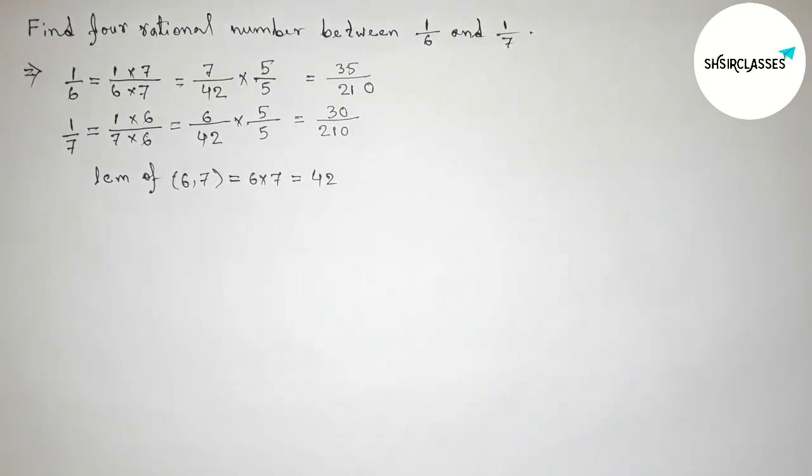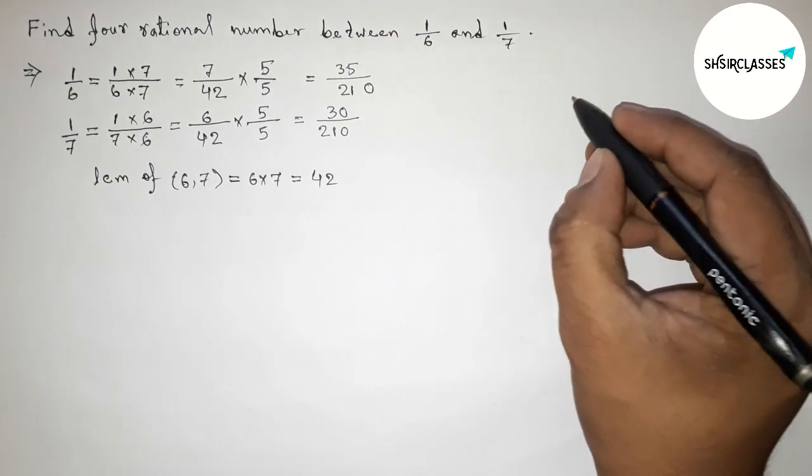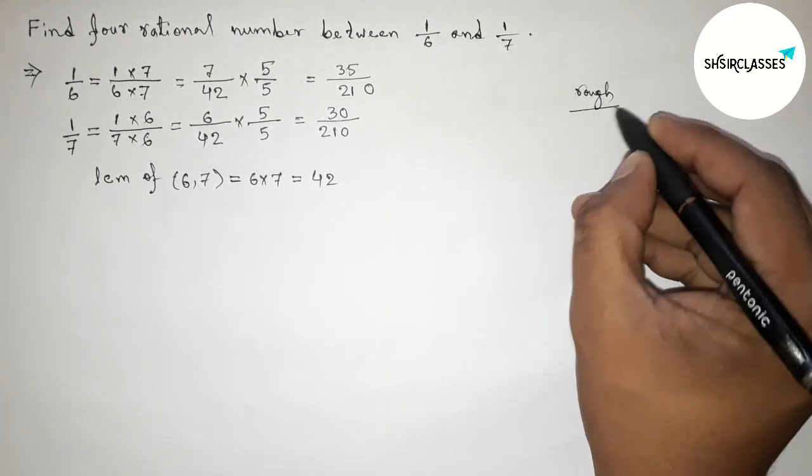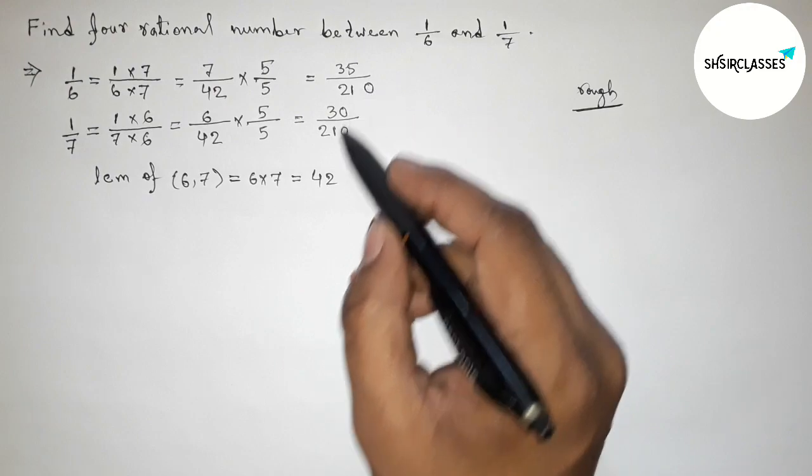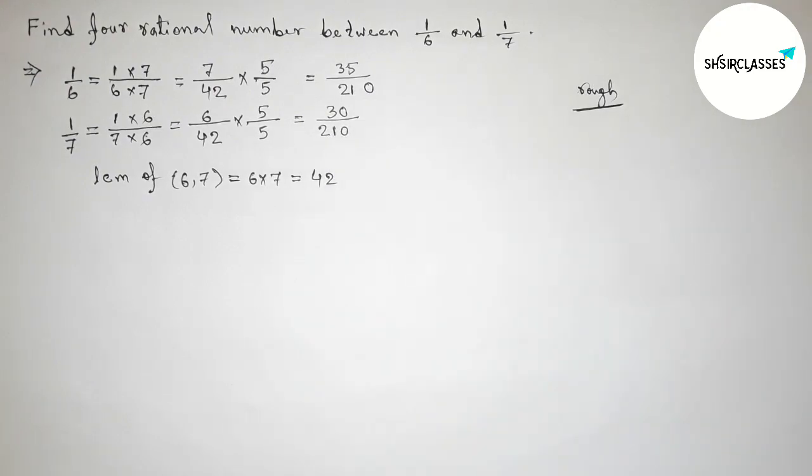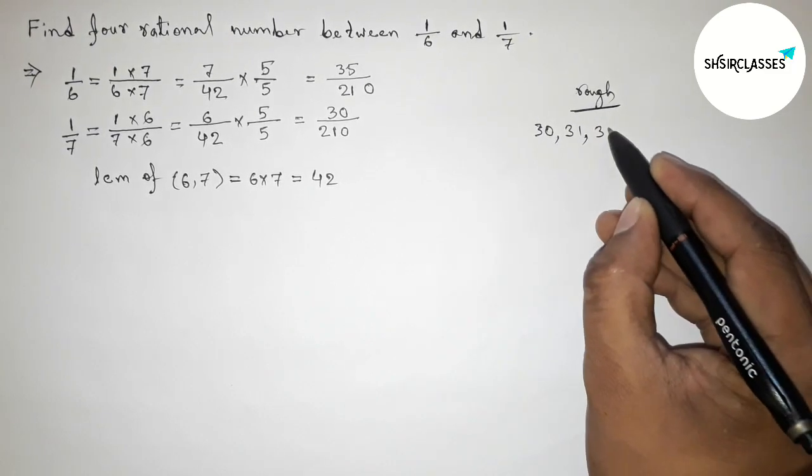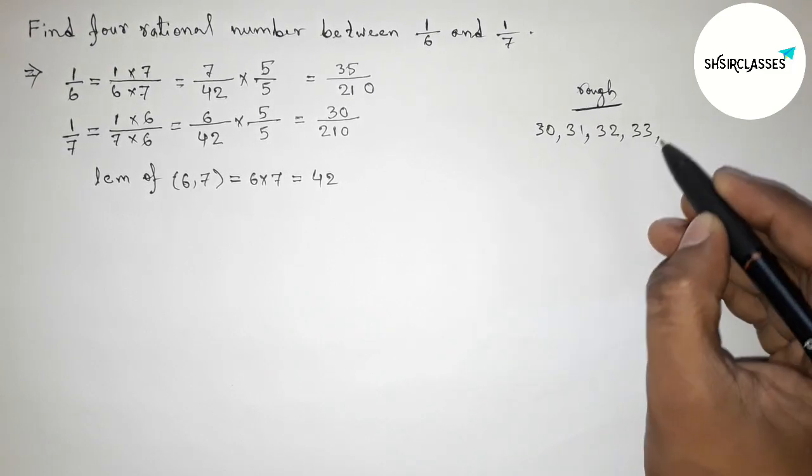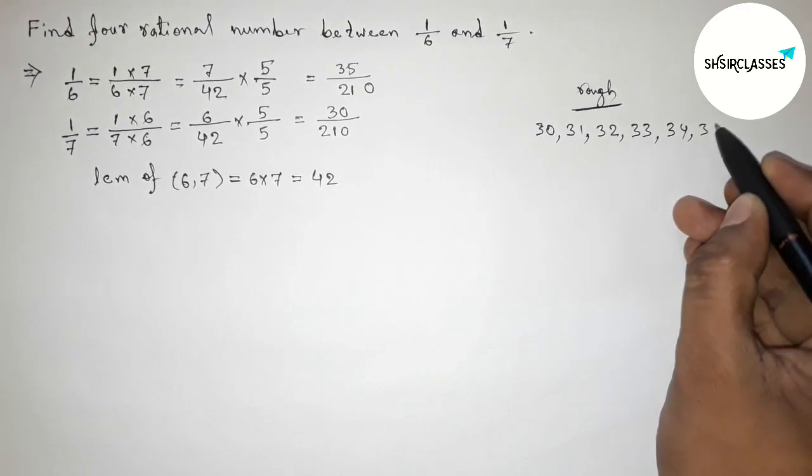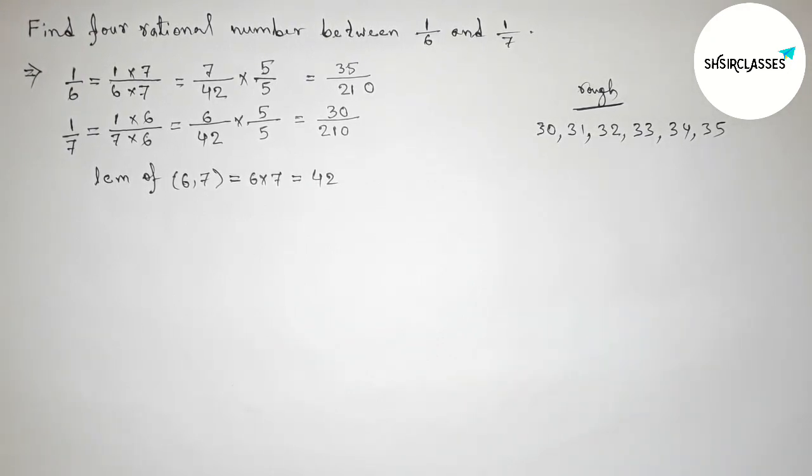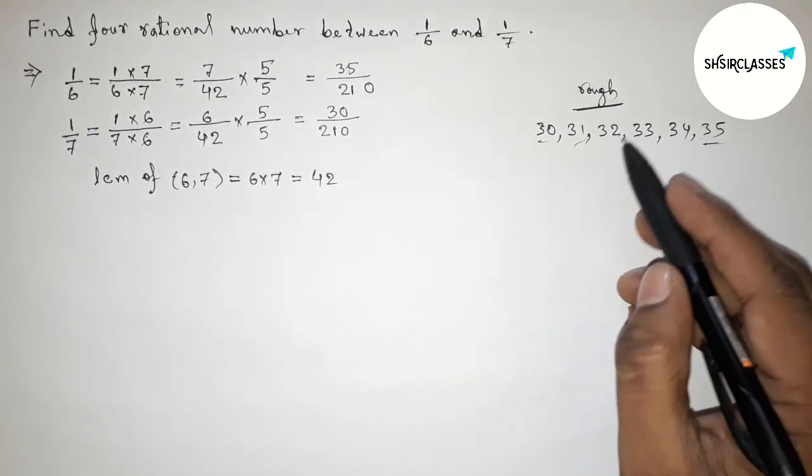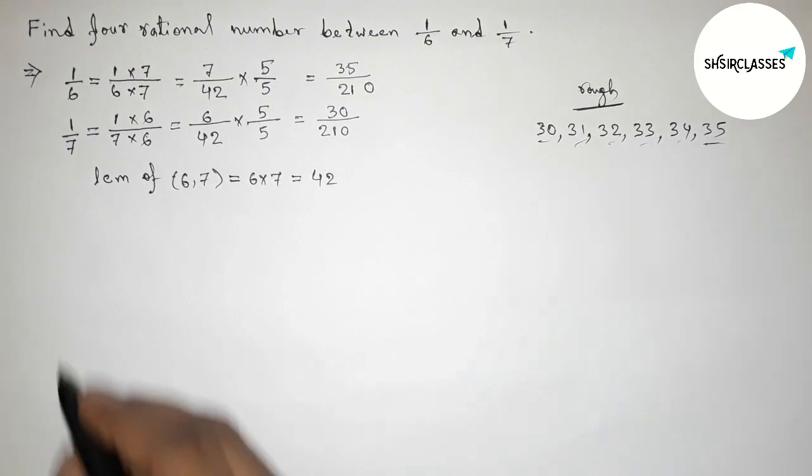Similarly here, 6 times 5 is 30 by 210. So now roughly discussing some important calculation here. Both denominators are equal, so now between 30 to 35 we can get here 4 integers: 31, 32, 33, and 34.